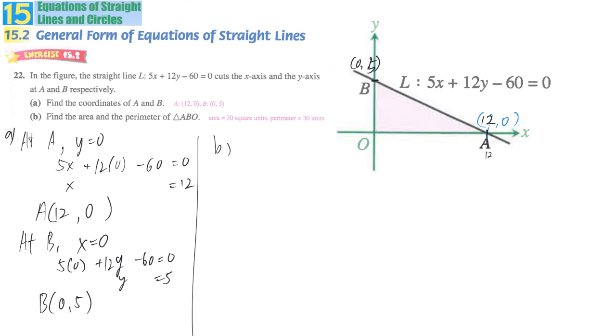In part B, they ask you to find out the area. In rectangular coordinates, the greatest advantage is we can find out perpendicular by horizontal and vertical. So from 0 to 12, the distance is 12. Vertical distance from 0 to 5, the distance is 5. So the area is equal to 1 over 2 base times height. The base is 12, then the height is 5. So we get 30 units squared.